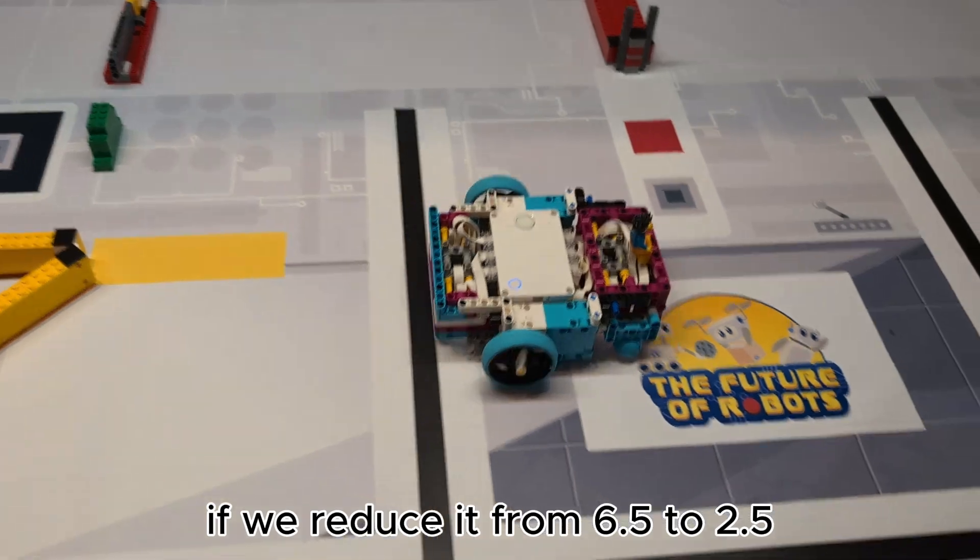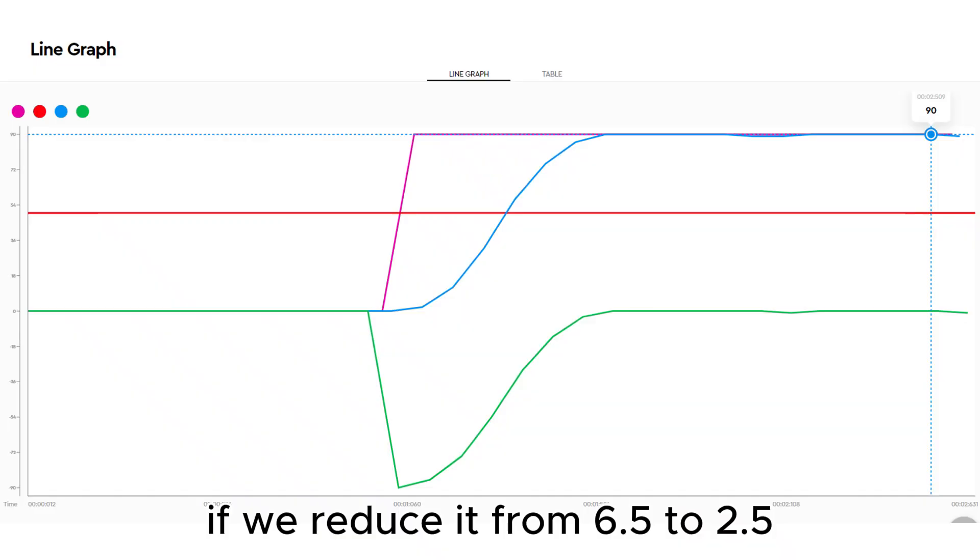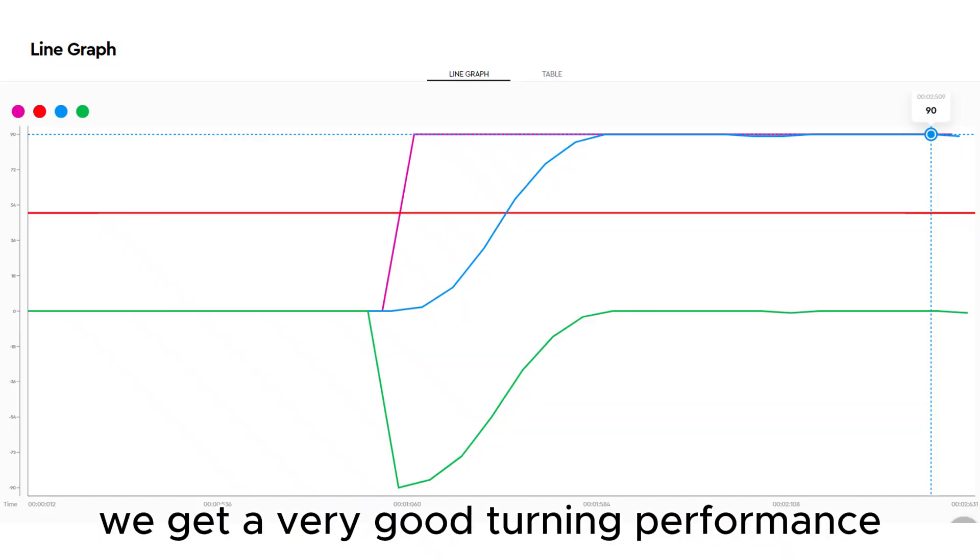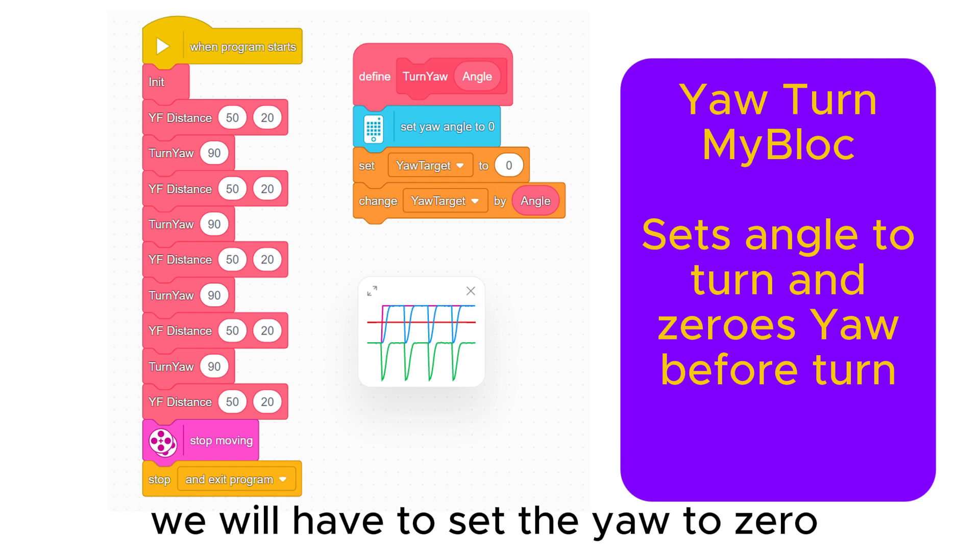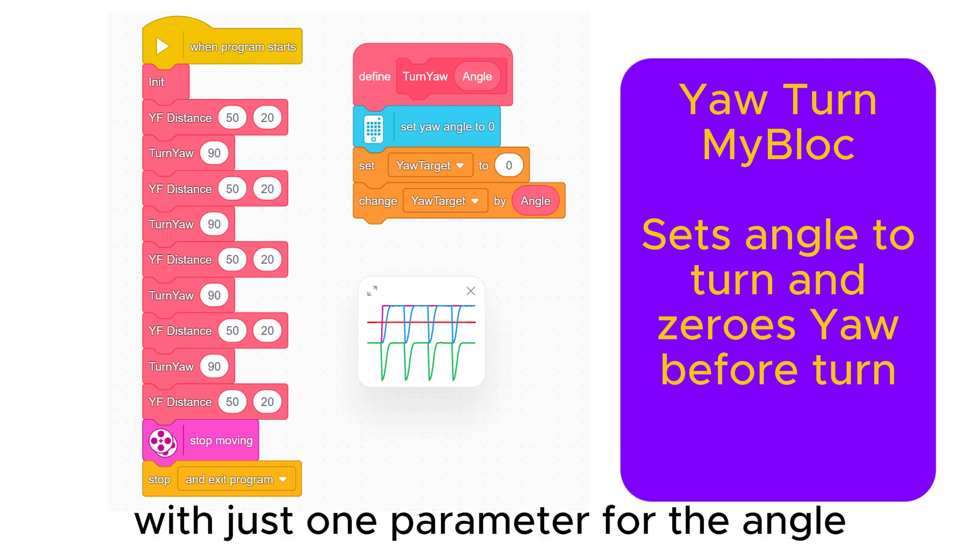If we reduce it from 6.5 to 2.5 we get a very good turning performance. If we want to turn through the 180 degree point using this turn, we will have to set the yaw to zero before turning. This can be done by making a very simple my block with just one parameter for the angle.